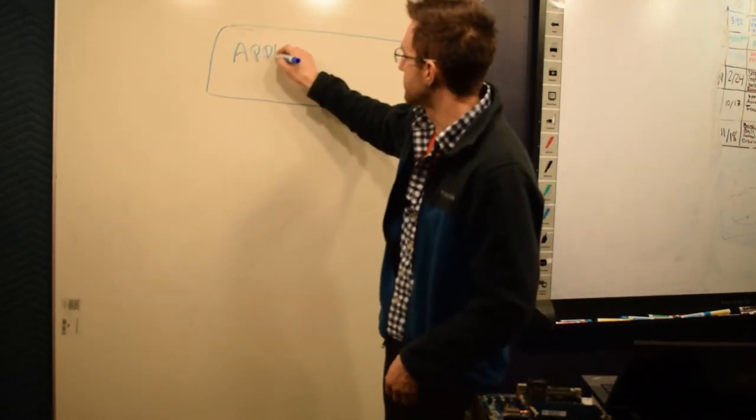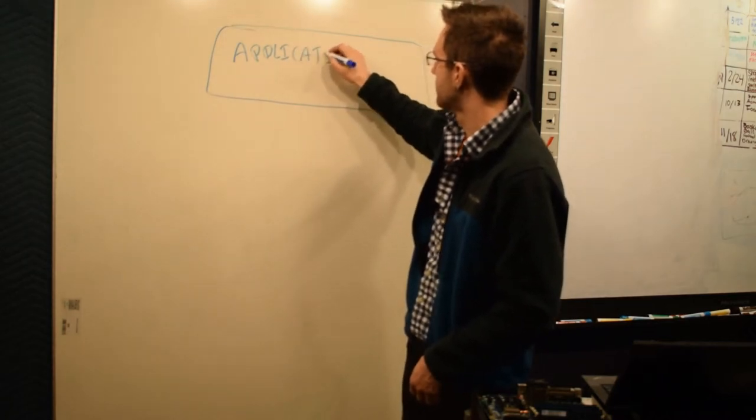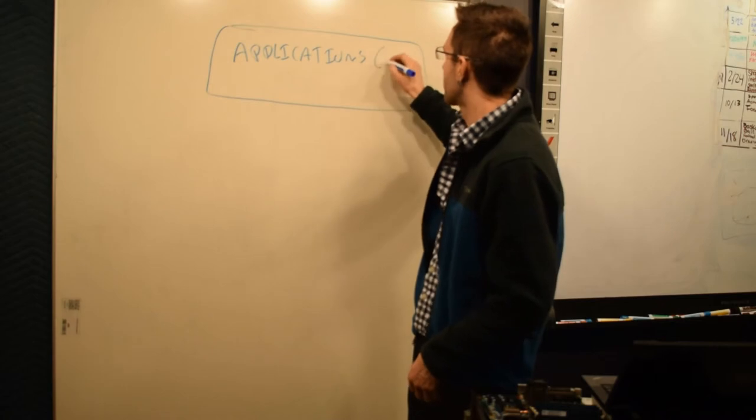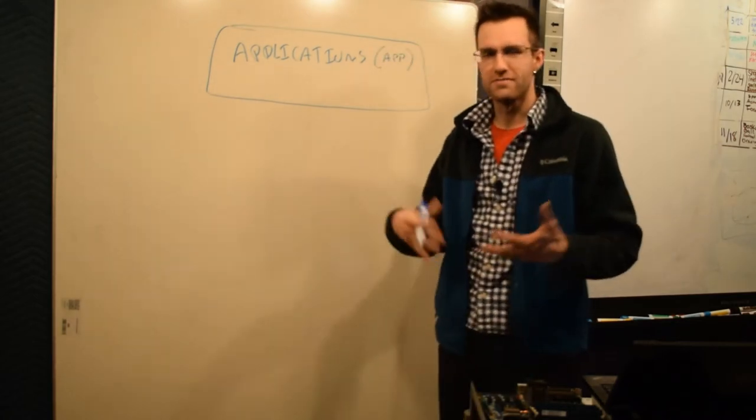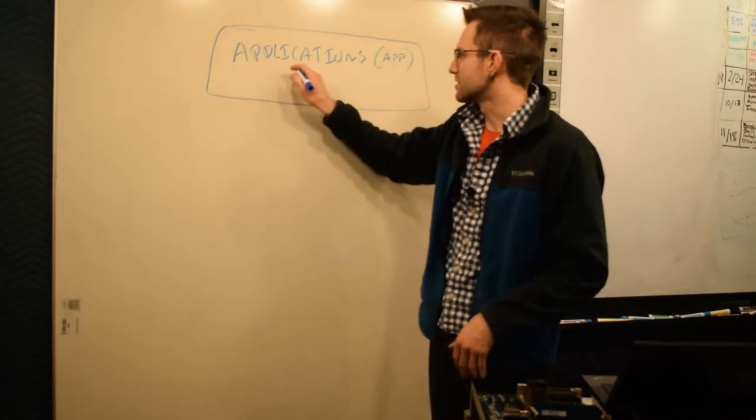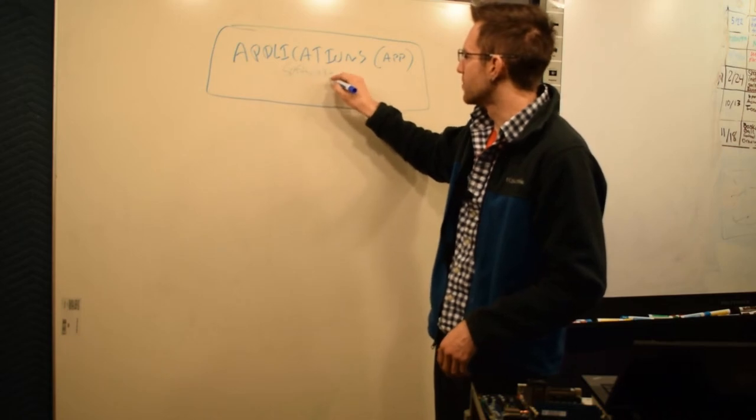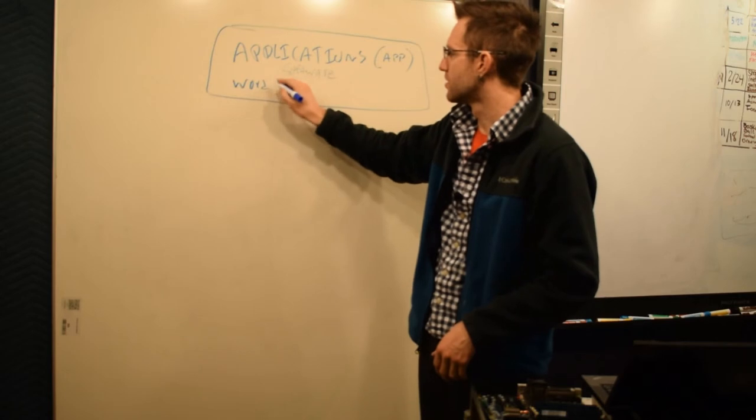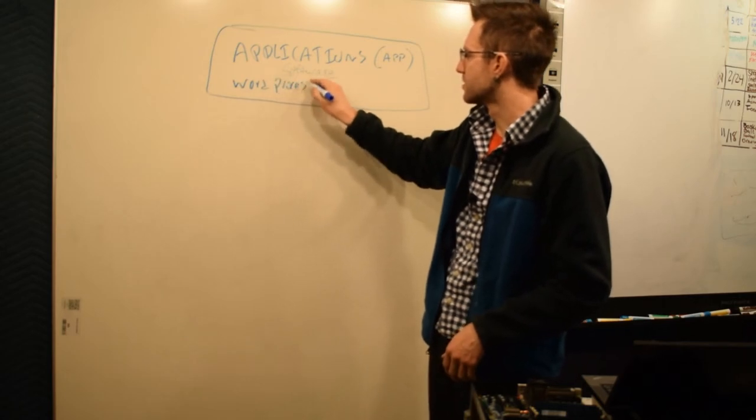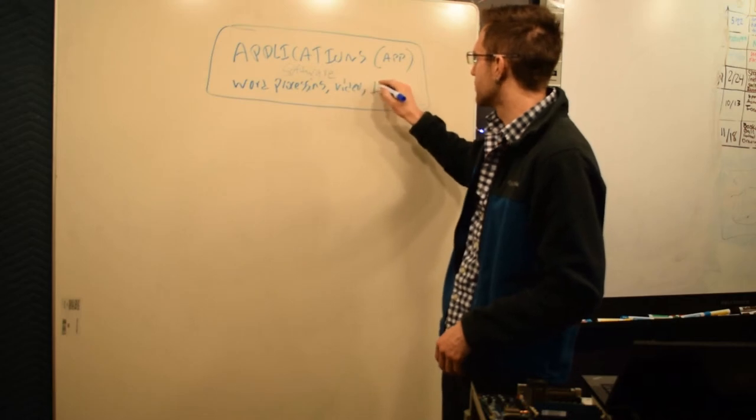So application software gets a rectangle up top. So applications, now we call everything an app because we want everything to feel modern and phone-like. But applications or user software is ultimately what we want to use. So this would be a word processor, word processing, video playing, and internet.